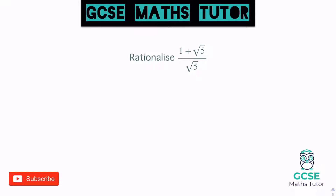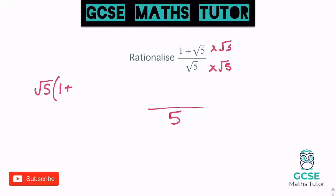Similar process to before, but now we've got two pieces on the top. We're going to times the top and bottom by root five and see what we get. On the bottom we know we get five — root five times root five is root twenty-five, which is five. On the top we've got root five multiplied by both pieces, like expanding a single bracket: root five times one gives root five, then root five times root five gives five. So the answer is root five plus five over five. It doesn't simplify — root five does not divide by five, so that is our final answer.